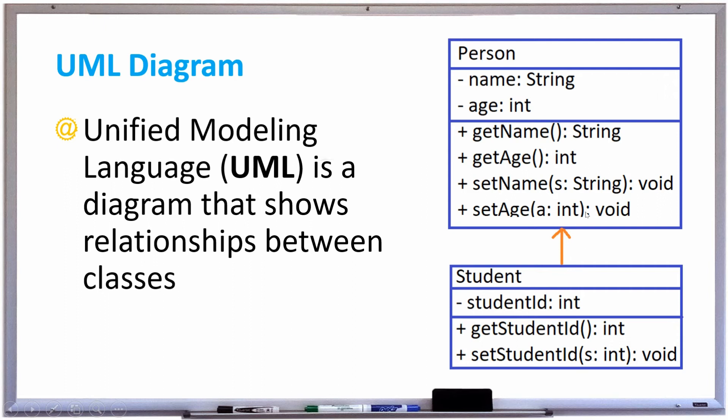By simply having that arrow pointing to the other diagram for person, we can infer that a student has a name, age, and student ID.